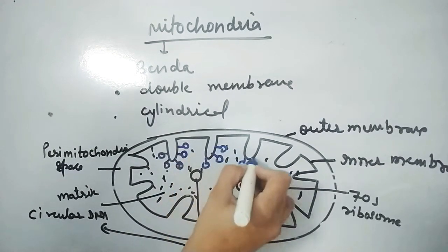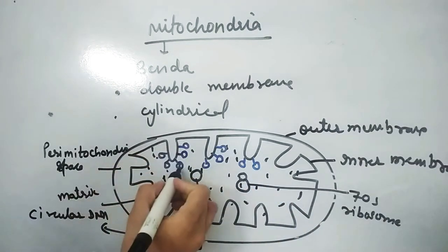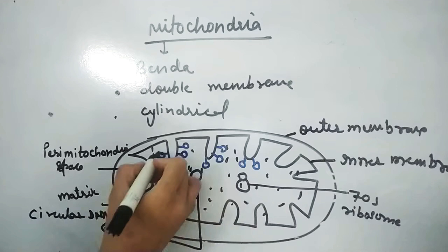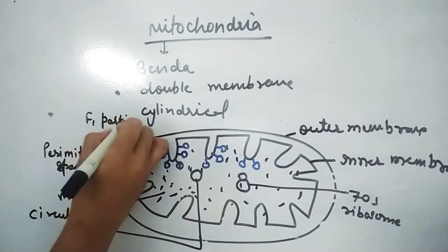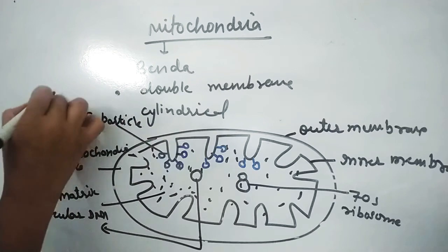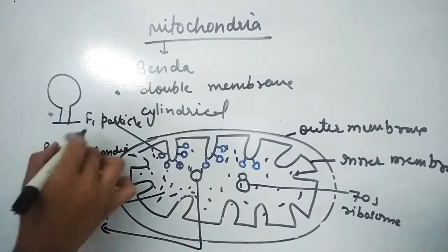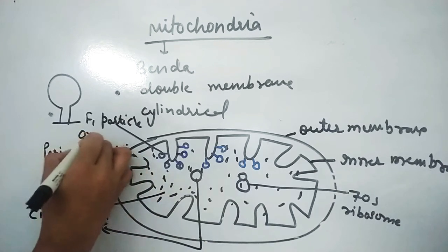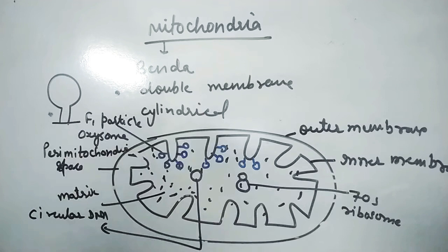On the cristae, there are structures called F1 particles. These particles are also known as oxysomes. The reason they are called oxysomes is because respiration occurs in eukaryotic cells.